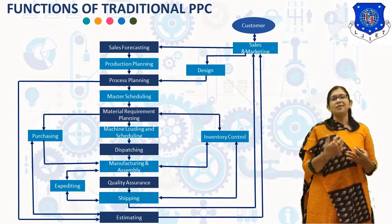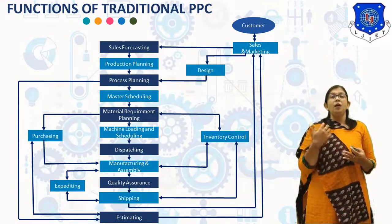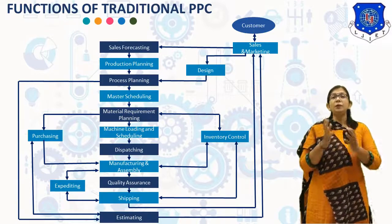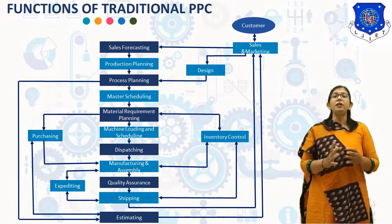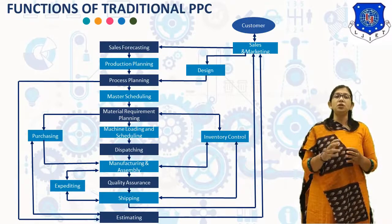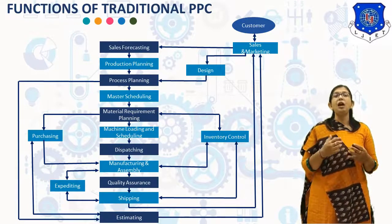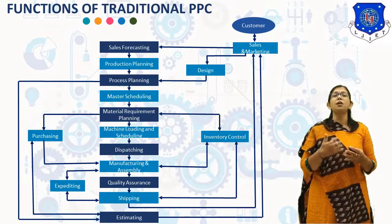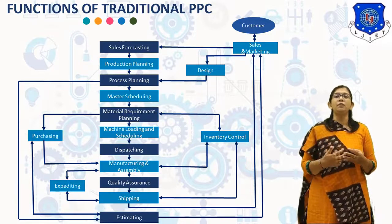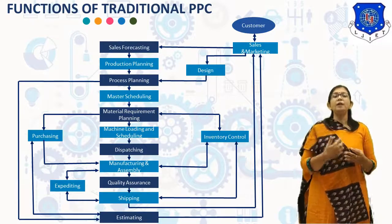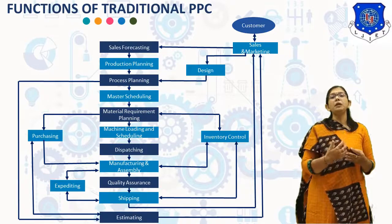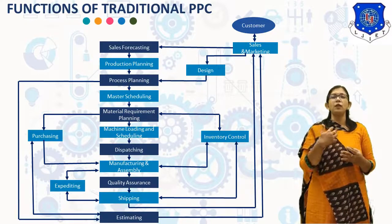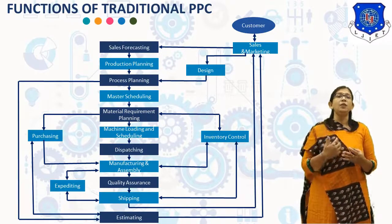The fifth function is Master Scheduling. Master Scheduling deals with the preparation of the delivery time schedule for the product. It specifies how many units of each product are to be delivered and when. It helps in preparing Material Requirement Planning, Purchasing, and Machine Loading and Scheduling.